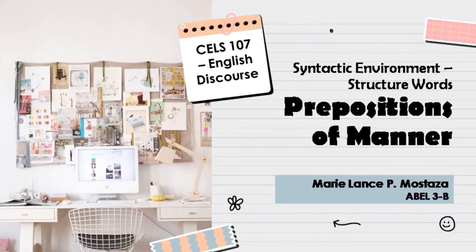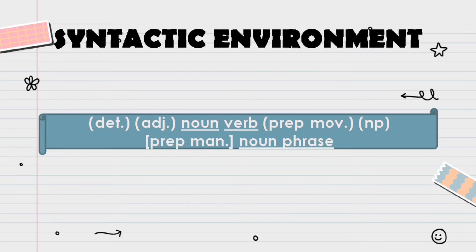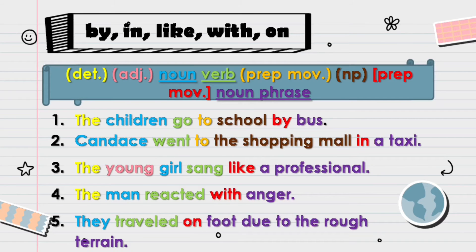Prepositions of manner describe the way things happen or the means by which things happen. It answers the question: how? Its syntactic environment is the same as the prepositions of movement, with the addition of an optional preposition of movement and a noun phrase. Here are a few examples using the prepositions of manner: by, in, like, with, and on.